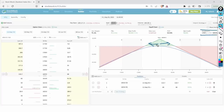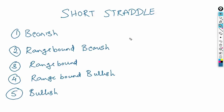However, short straddle need not always be a range-bound strategy. There are five different views for which you can create a short straddle: bearish, range-bound bearish, range-bound, range-bound bullish, or bullish. So short straddles can be used for five different market views. Let me show you how to create a short straddle for a bullish or bearish view.